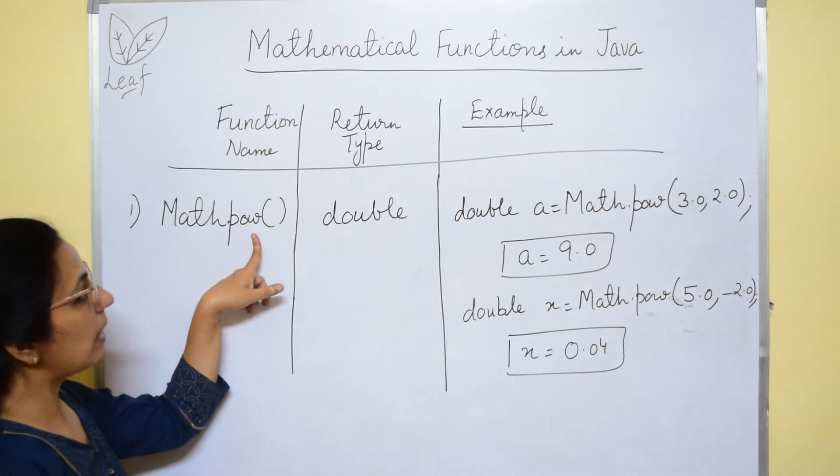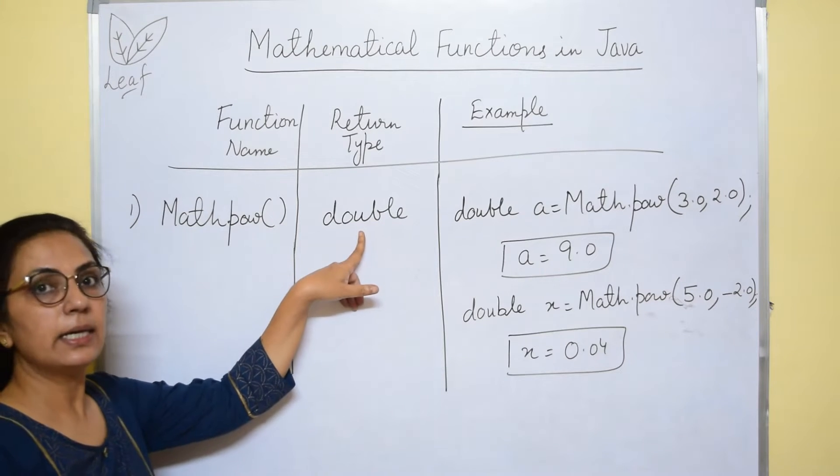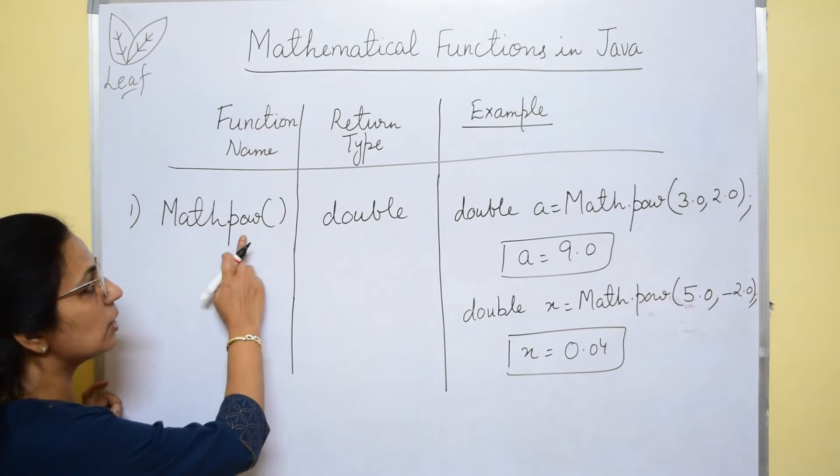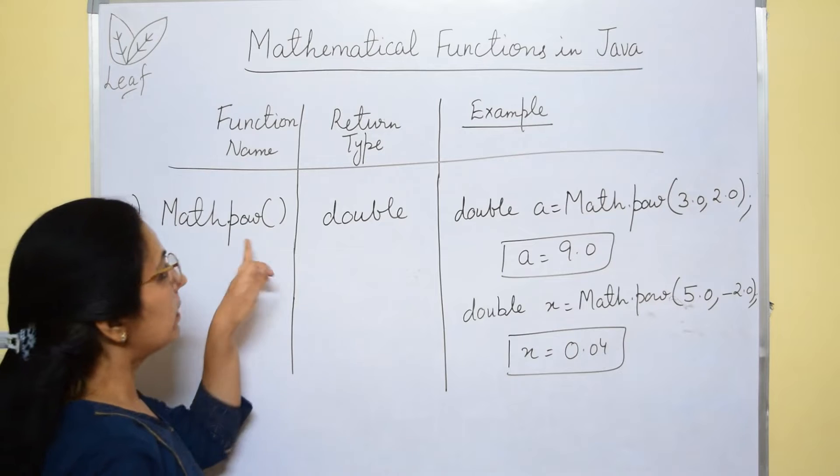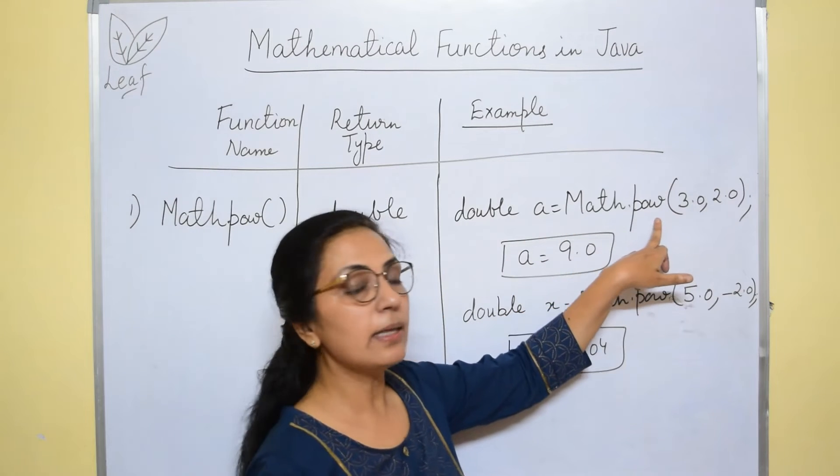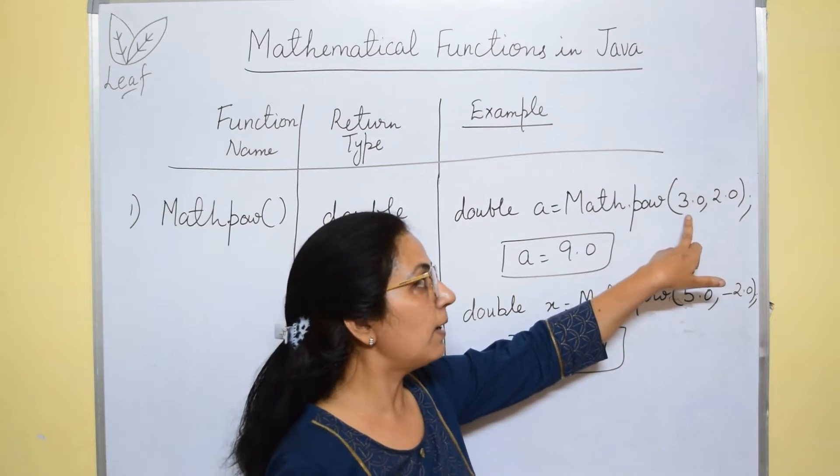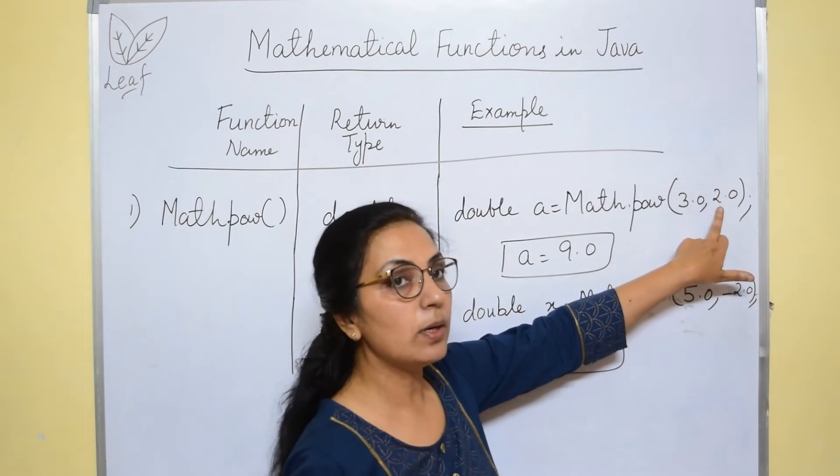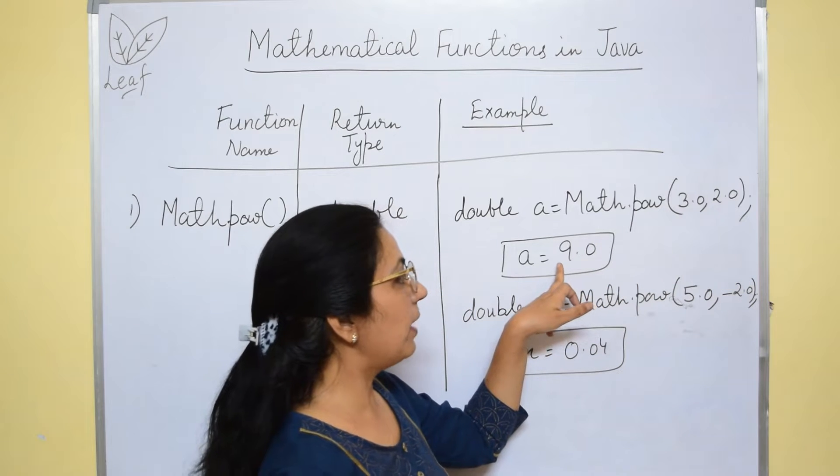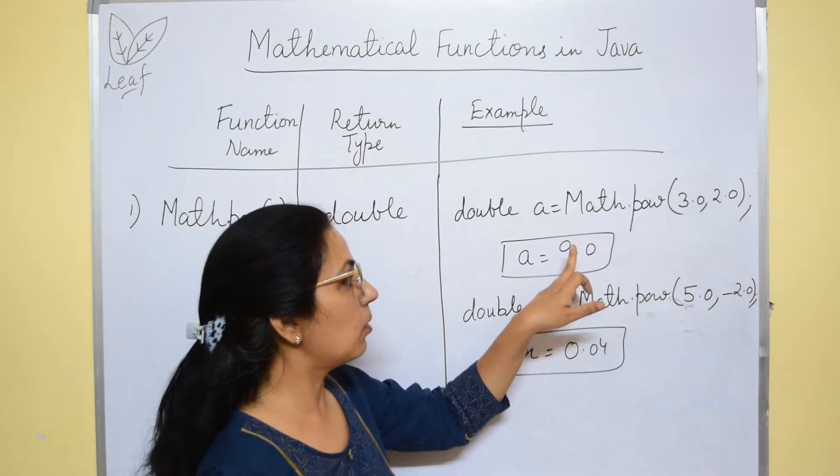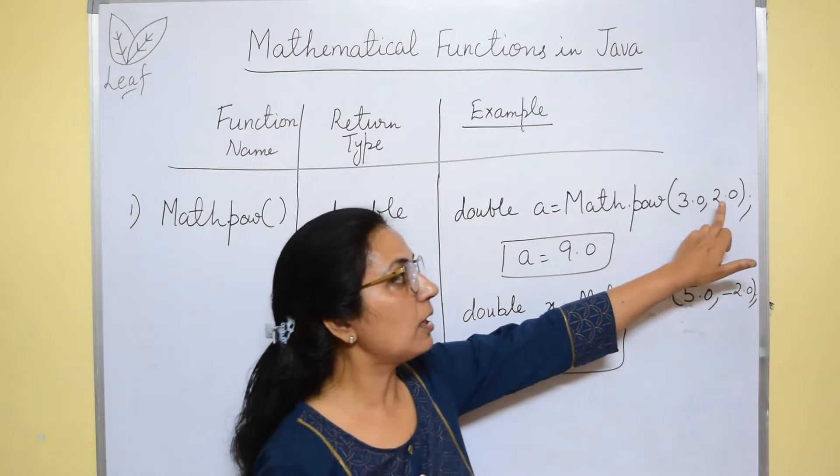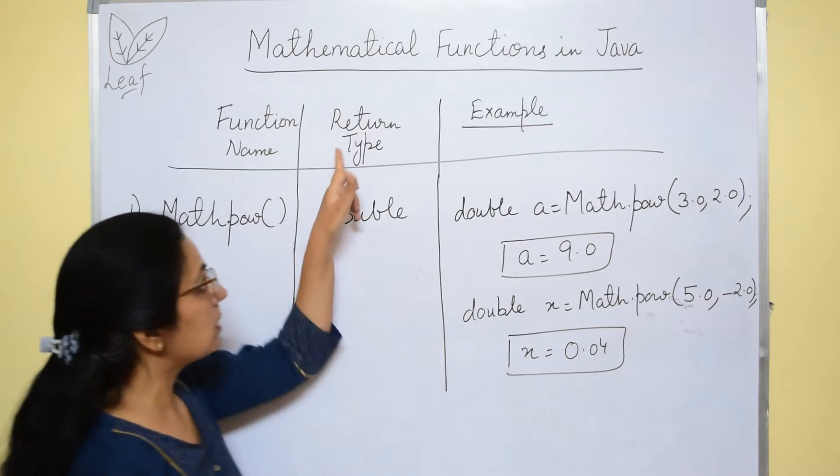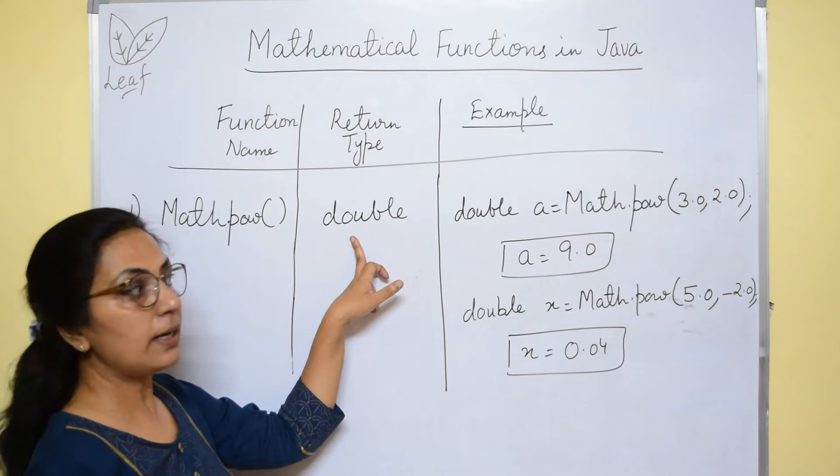Next, we have POW function which will always return double value. POW is something related to power. This function is used to calculate the power value of the given number. 3.0, 2.0 that means 3 to the power 2. So the answer will be 9.0. It will not give you 9. Even if I write 3, 2, then also answer will be 9.0 because it always returns the answer in double type.